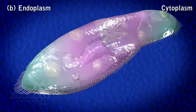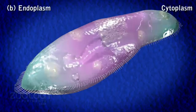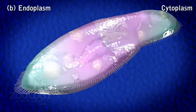The prominent endoplasmic organelles are nuclei, contractile vacuoles, and food vacuoles.